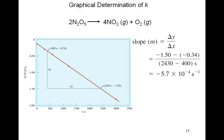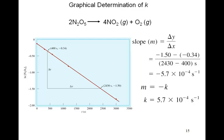Plugging in the numbers, the slope comes out to negative 5.7 times 10⁻⁴ seconds to the minus 1. Therefore, since the slope equals negative K, K is equal to 5.7 times 10⁻⁴ seconds to the minus 1.